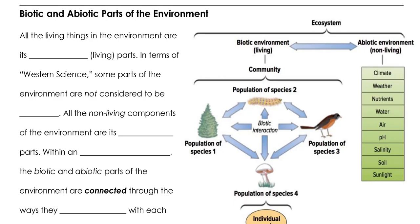All the living things in the environment are referred to as its biotic parts. These are the living components of the ecosystem, the populations of species that coexist in a community interacting with each other and the physical environment.